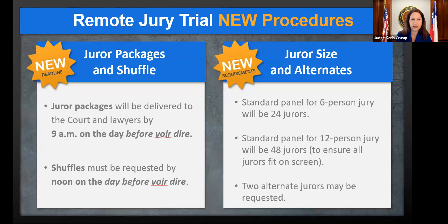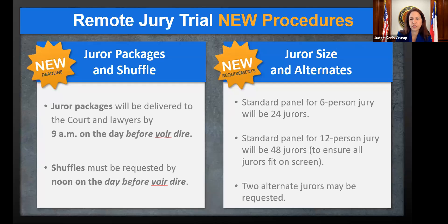If there is a motion, it must be made by noon. The standard panel for a six-person jury is 24 jurors; the standard panel for a 12-person jury is 48. Up to two alternate jurors may be requested.